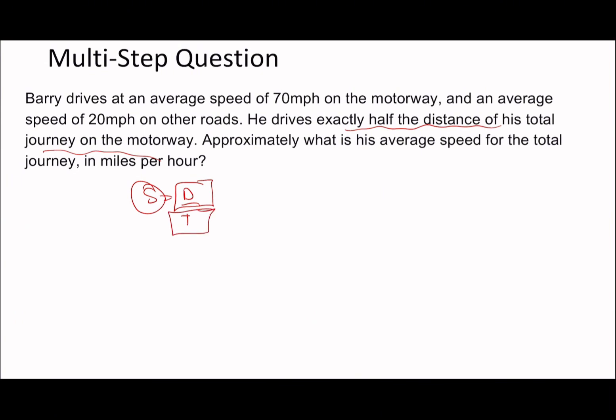So what we have to do is, because we don't know anything about the distance at all, we kind of have to use fake values. So we're going to say that he spends X distance on the motorway and X distance on the other roads. So if he's driving at an average speed of 70 miles per hour, the time on the motorway will therefore be, so time is distance divided by speed, X divided by 70. And the time here is therefore going to be X divided by 20.